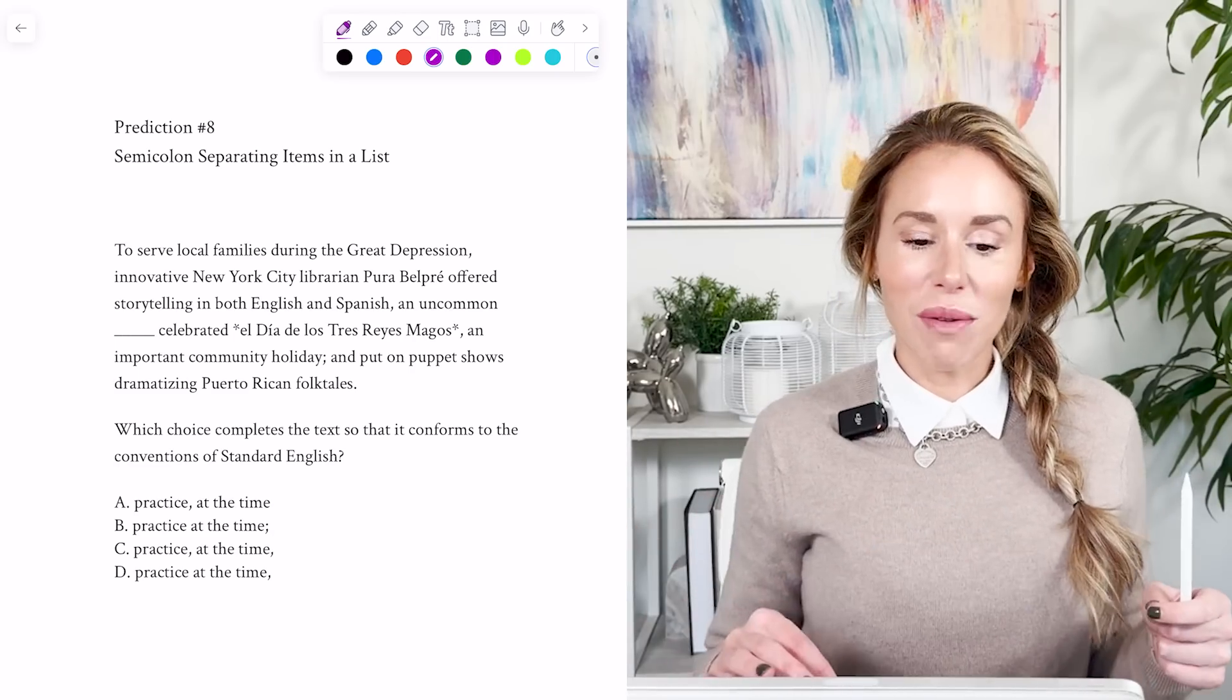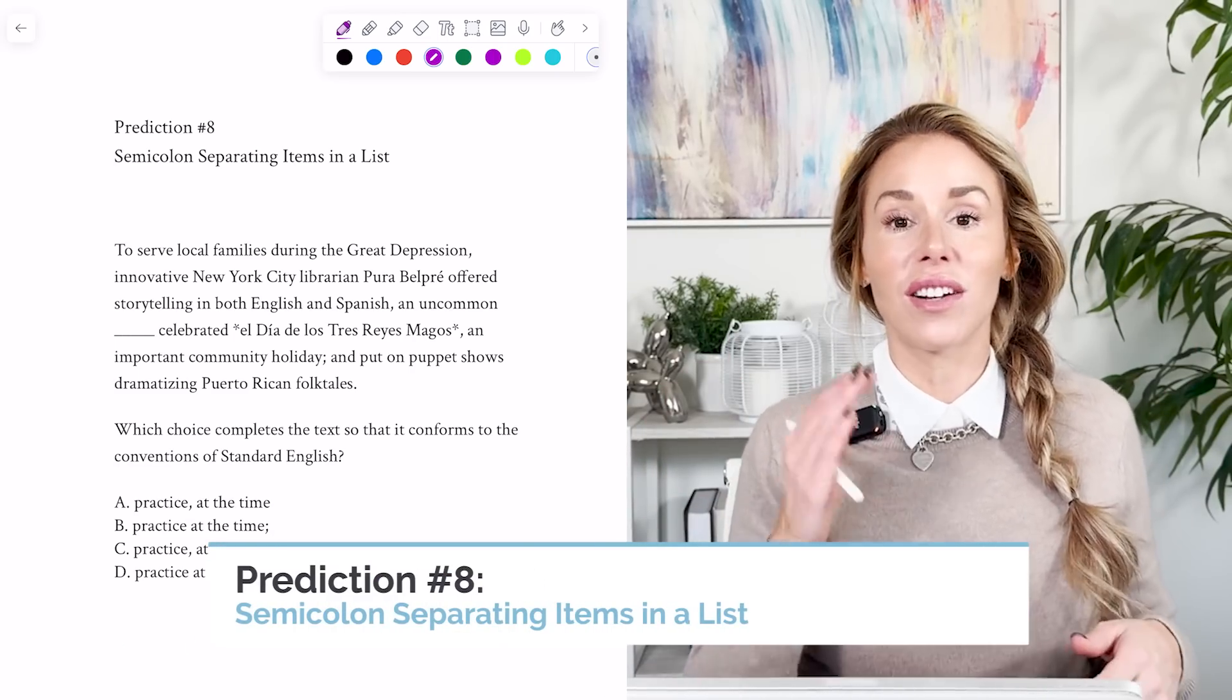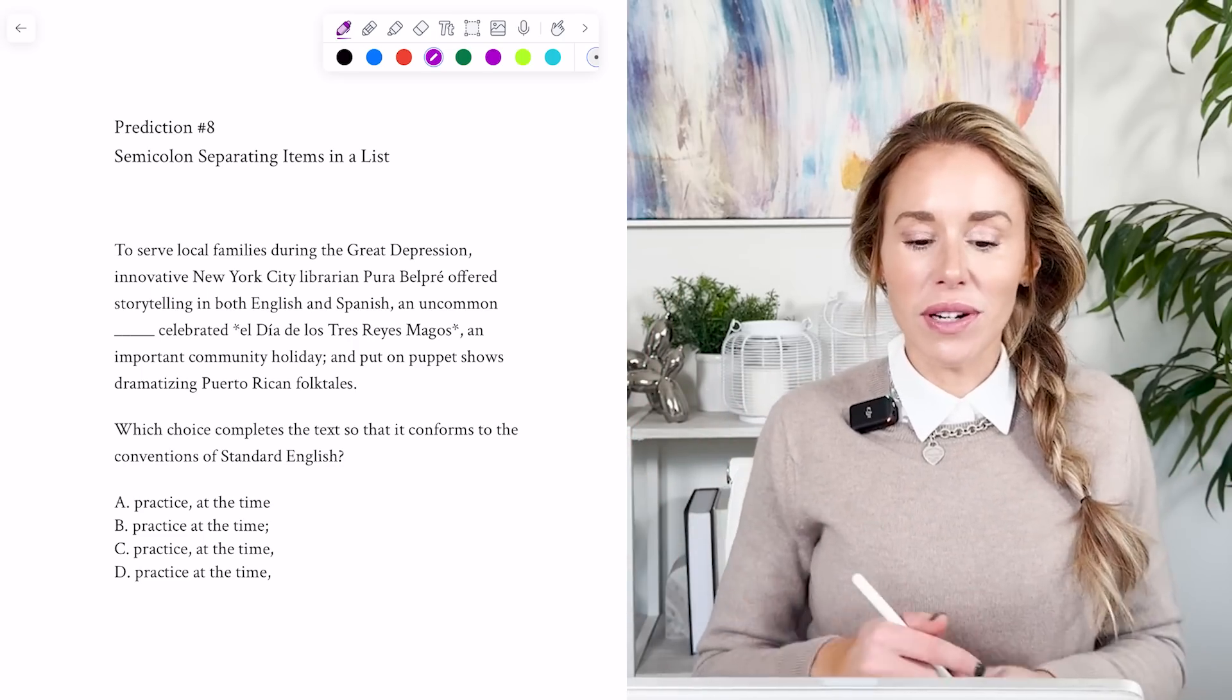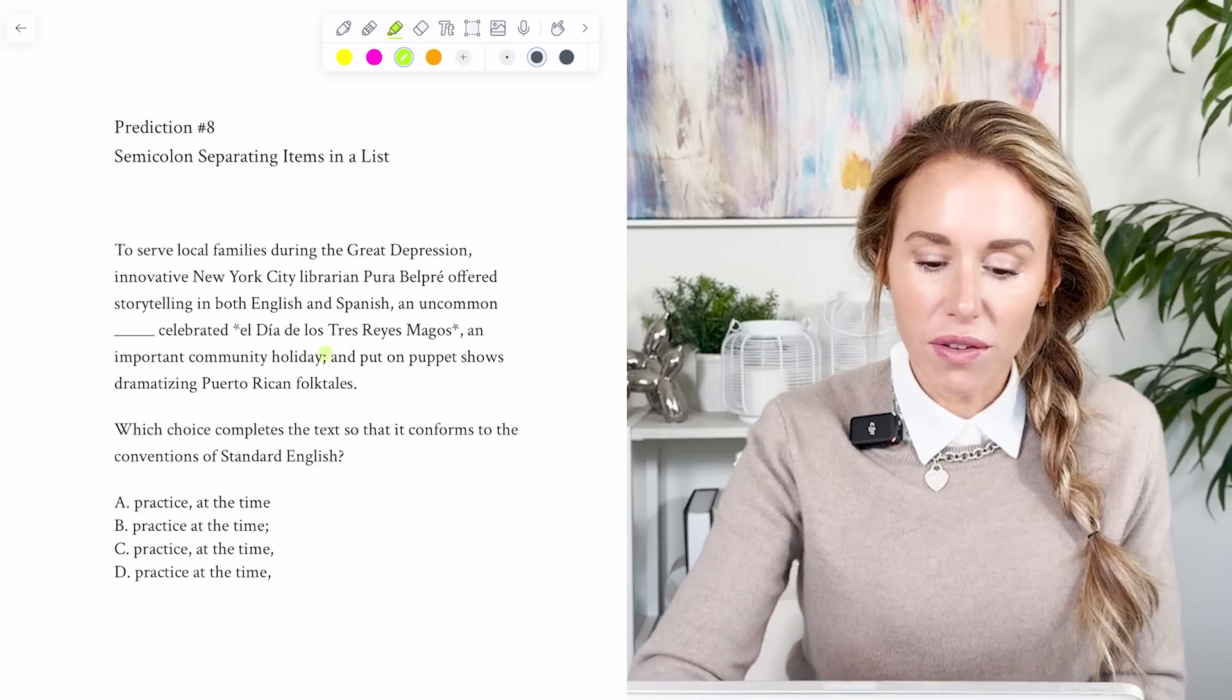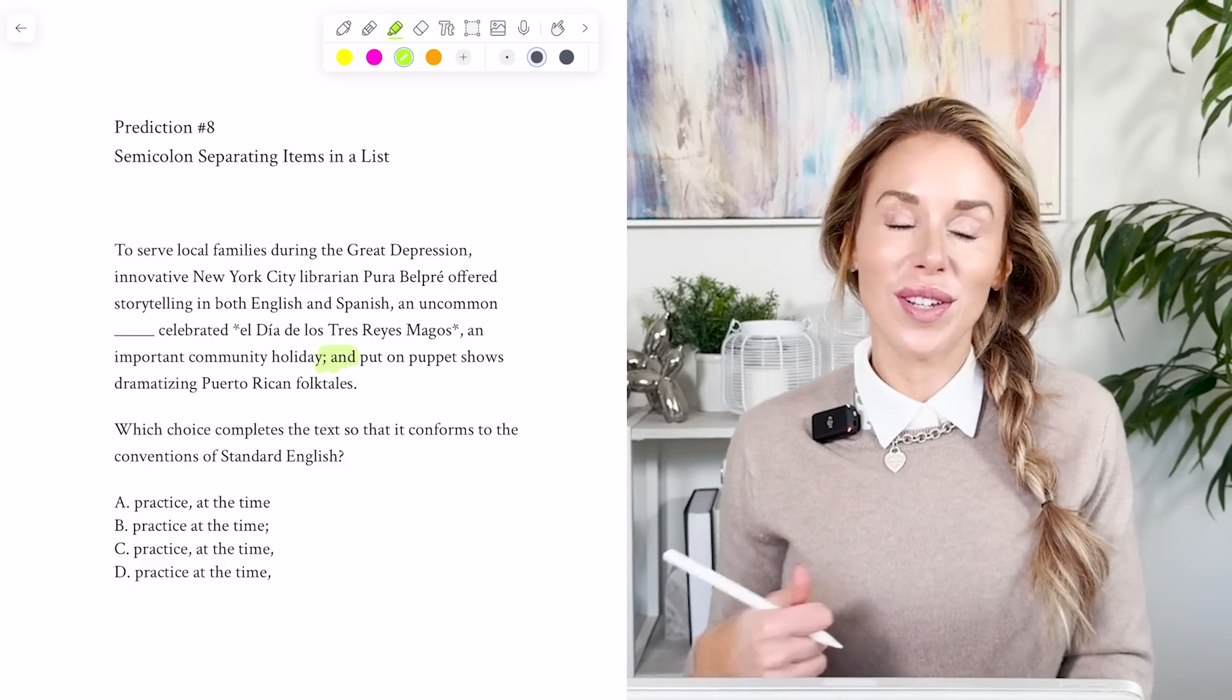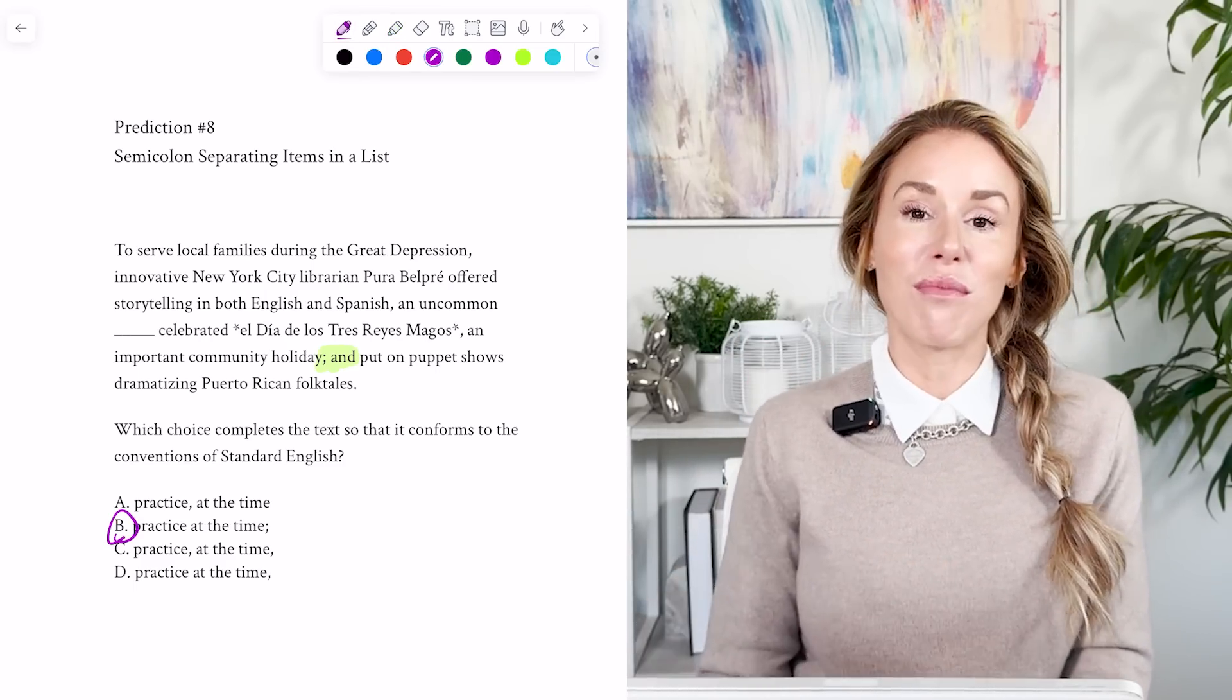All right, my next prediction, prediction number eight, is that semicolons are going to separate items in a list. So here's what I want you to look for. This is pretty simple. When you read the sentence, look down towards the end, because if you notice a semicolon with an and right after it, they're definitely using semicolons to separate items in a list. So at that point, just pick the semicolon and move on.